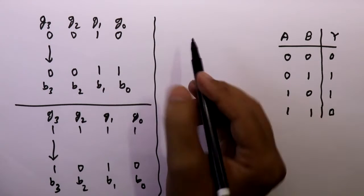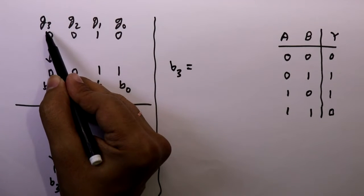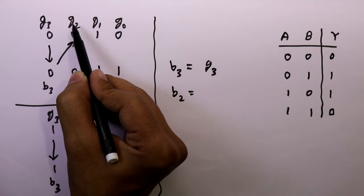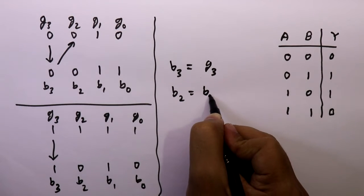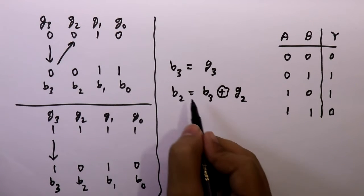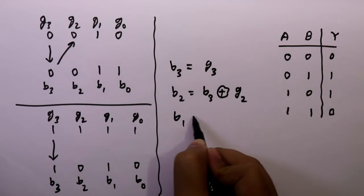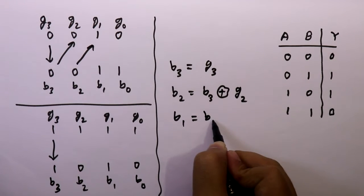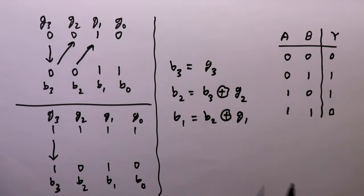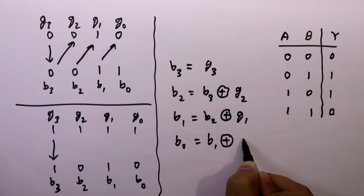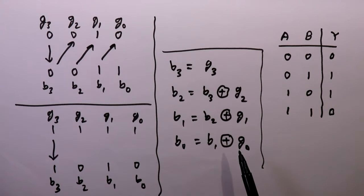So g3 equals b3. To find b2 we have to do b3 XOR g2. To find b1 we have to do b2 XOR g1. To find b0 we have to do b1 XOR g0. From these equations we have to design our practical circuit.